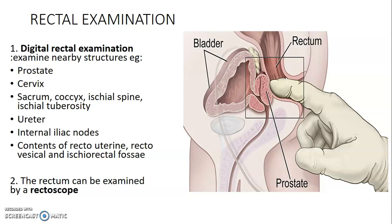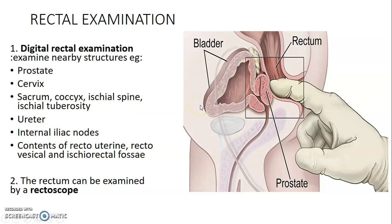When doing a digital rectal exam, you pass a finger through the anus into the rectum and palpate some structures, which is why you need to understand the relations of the rectum. During a digital rectal exam, you can palpate the prostate, and in females, you can palpate the cervix. You can also palpate the sacrum, coccyx, ischial spine, ischial tuberosities, the ureter, internal iliac nodes, and the contents of the rectouterine and rectovesical and ischiorectal fossa. The rectum can also be examined by a rectoscope.